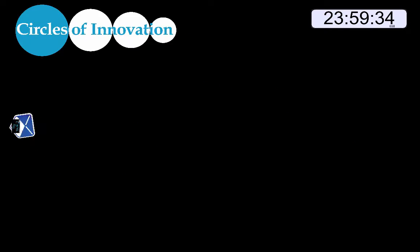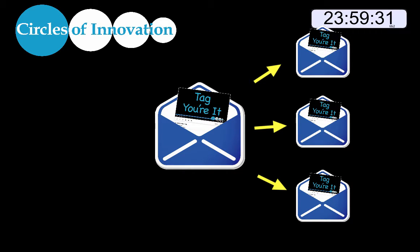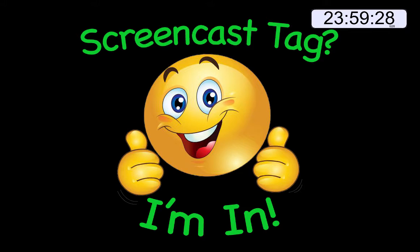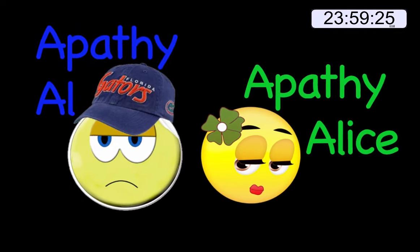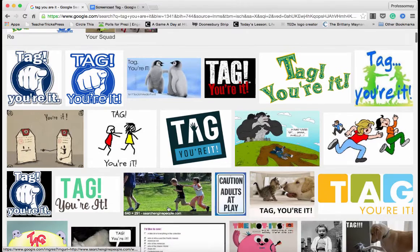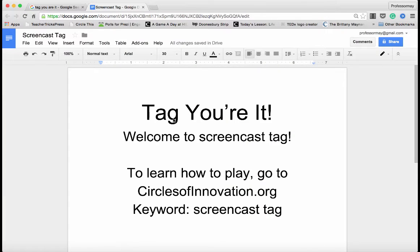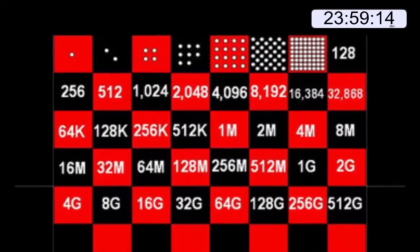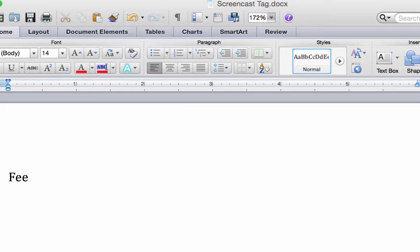To do this, forward the video that tagged you to three new people. And don't forget to include the person who tagged you — that way that person will know you are playing and not being an Apathy Al or an Apathy Alice. Then, sometime within the next four days, make a screencast and share it with the three new people you tagged and the person who tagged you. With exponential progression, who knows? Perhaps we can have all teachers and students screencasting by the end of the month.